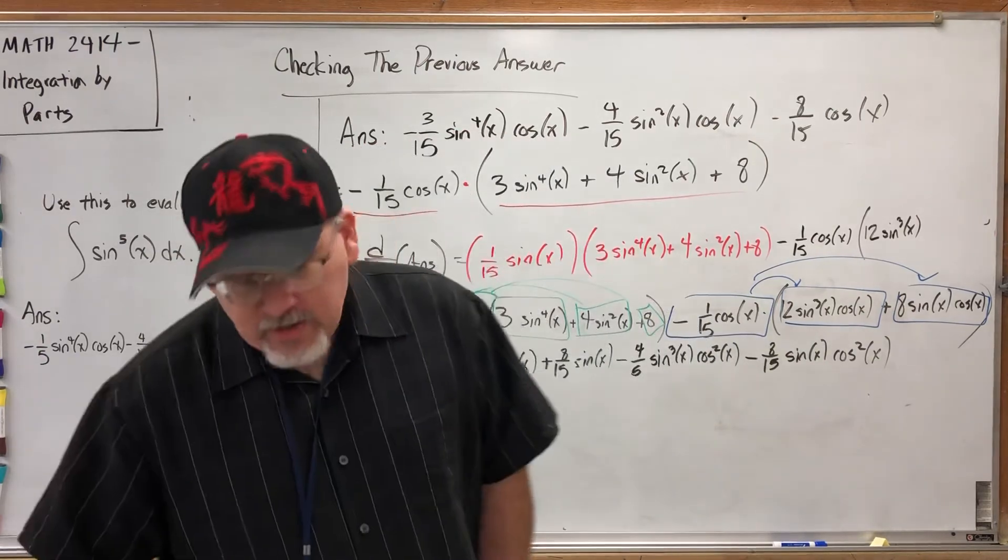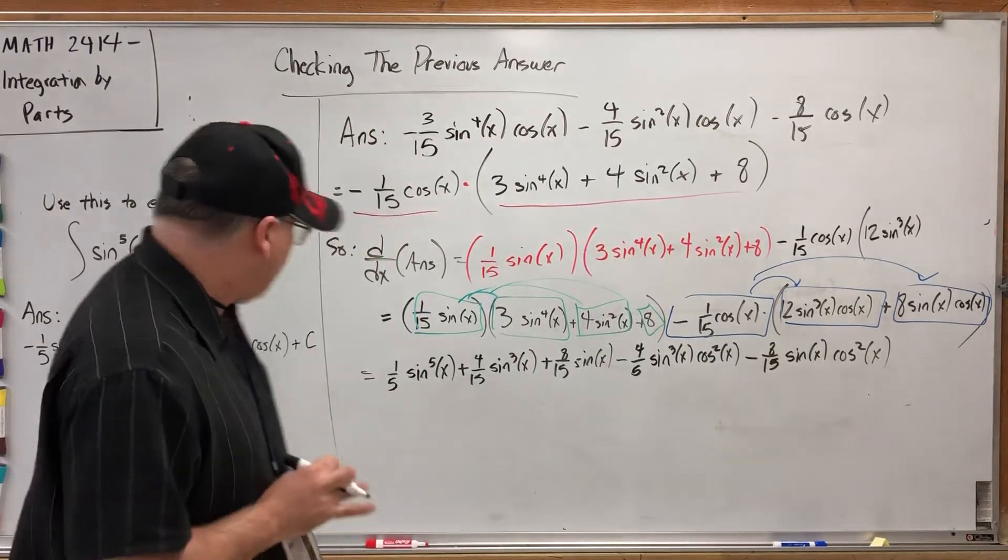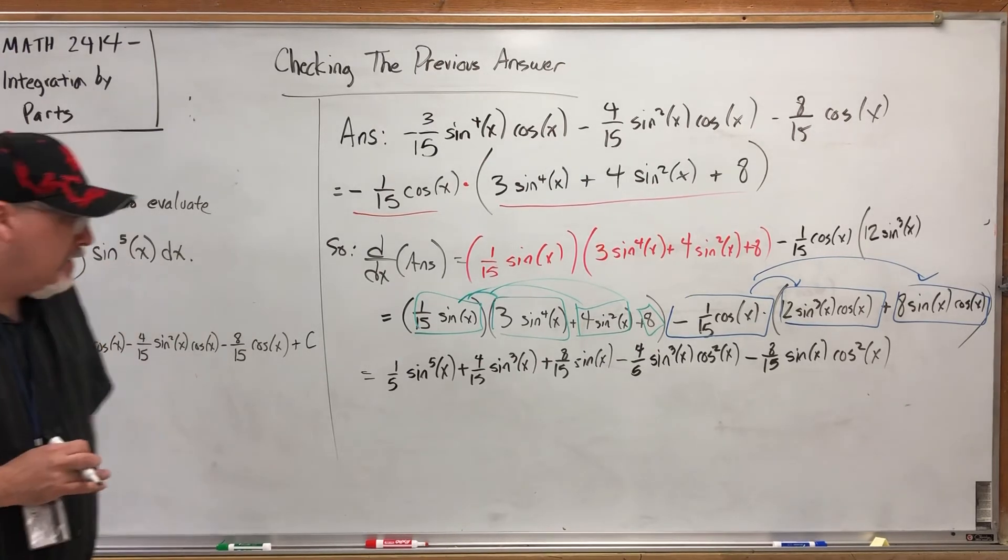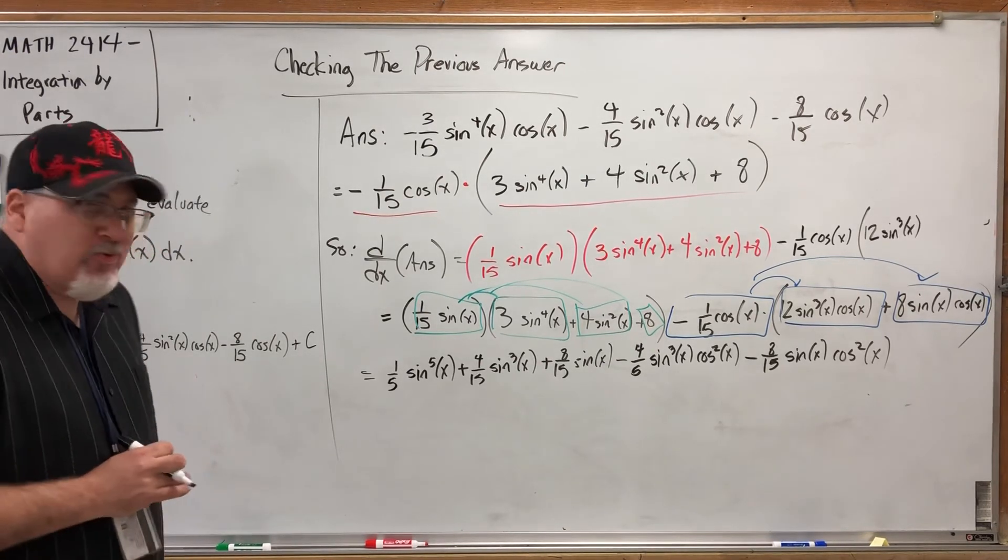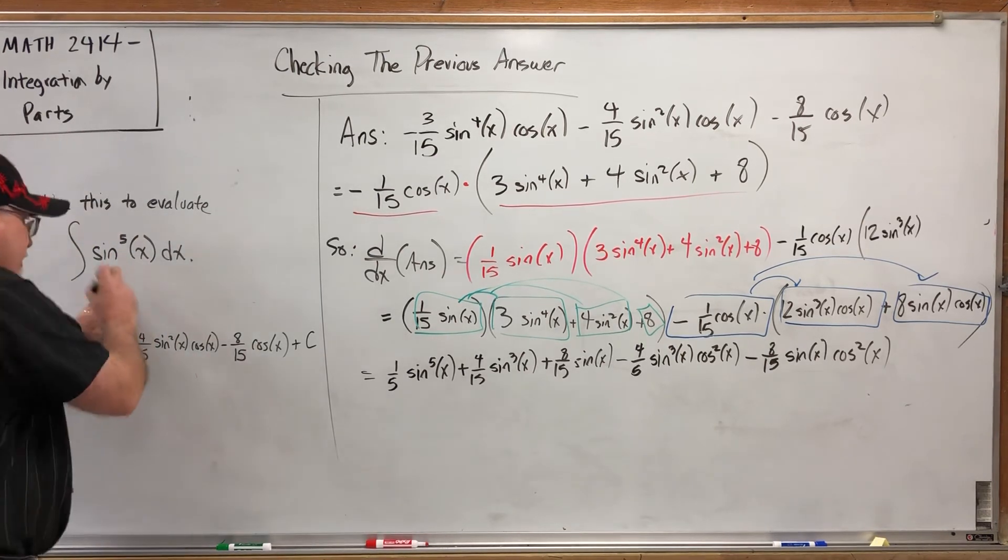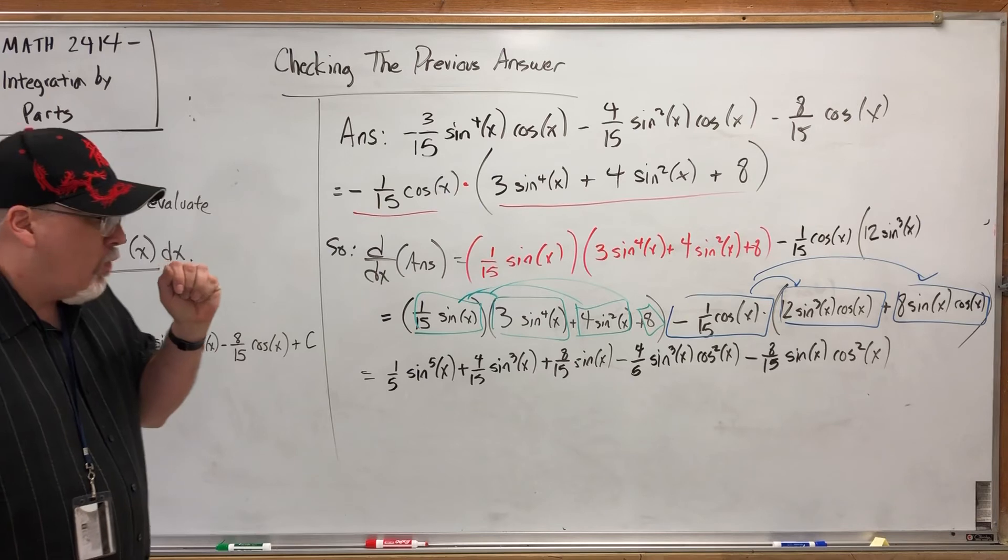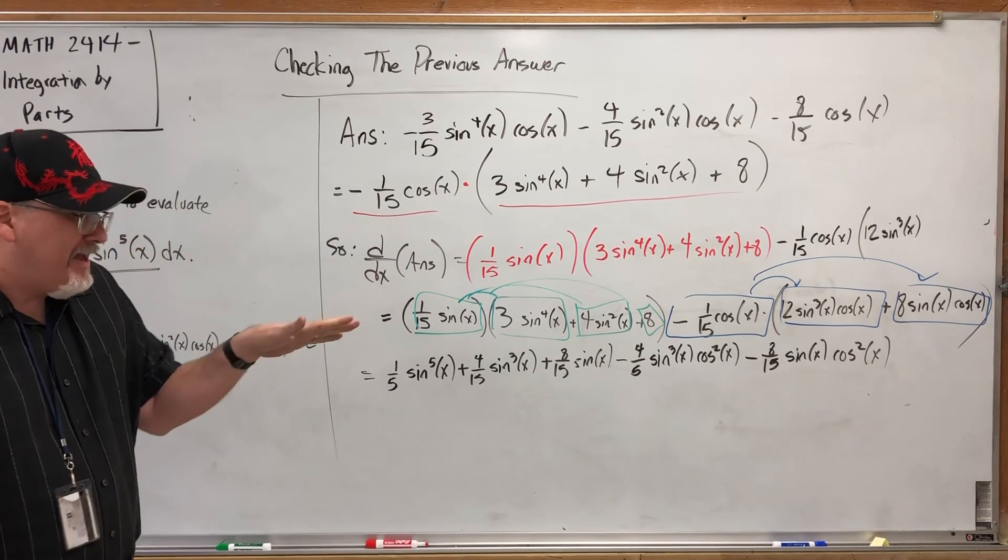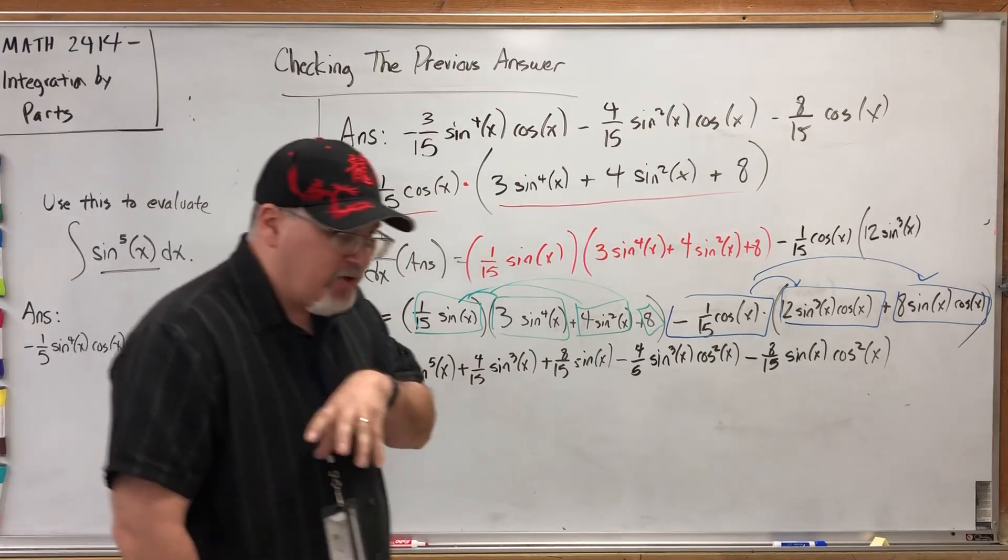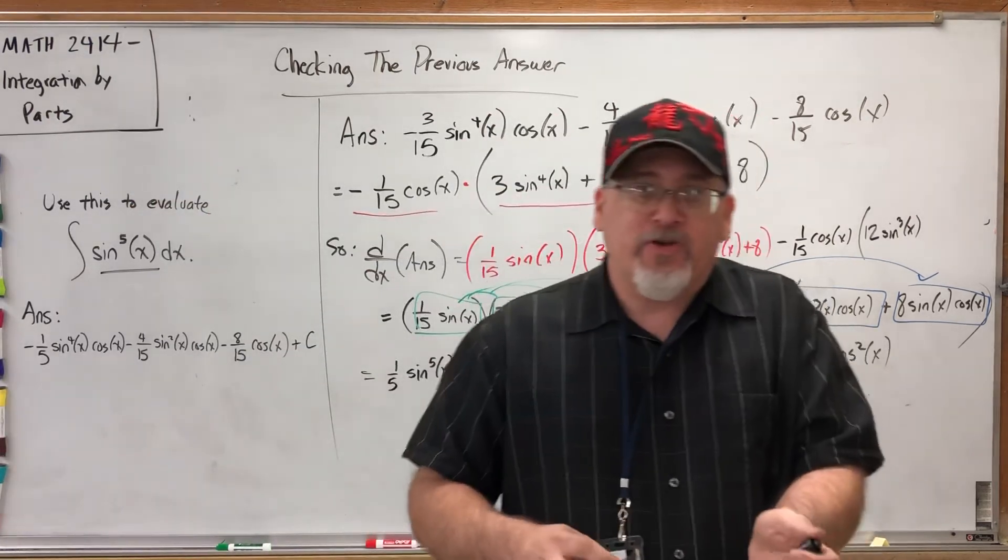However, there's a good lesson to learn here: if you have a goal in mind, my goal is sine to the fifth of X. Identify what is in the way and what you're going to fix about it. Now there's a lot of things wrong with this in terms of being this, but one of the glaring things is that has cosines and this doesn't.